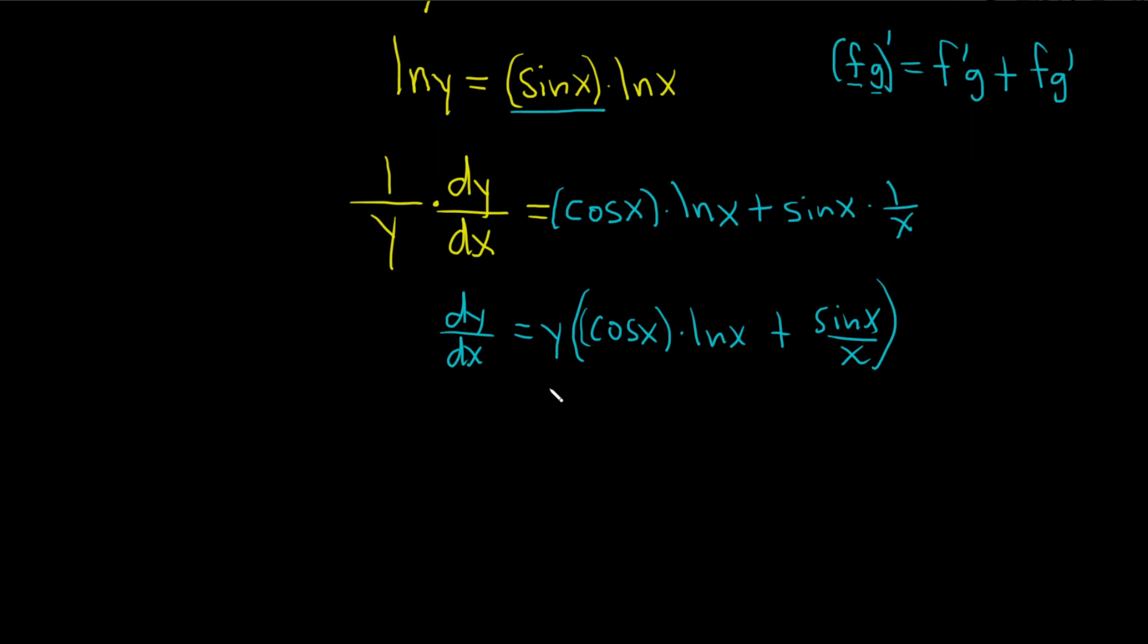I've been stopping here in some of the other examples, but I'll go ahead and plug it in this time. So dy dx, I say plug in what? Well, plug in y. We know that y is equal to x to the sine x. So this is going to be x to the sine x times cosine x times ln x, and then plus sine x over x.